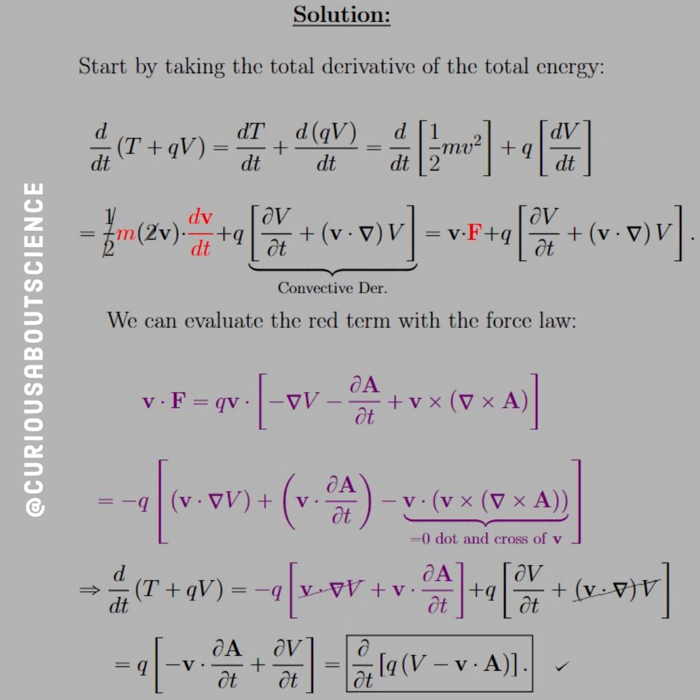So, we have dv dt, since we don't know what V actually is, we have to apply a chain rule there. Similarly, the dV dt, we have to apply the convective derivative, which is shown in the book as to why, because we have the partial, but we also have the field changing with respect to its velocity that we need to incorporate there into the total derivative.